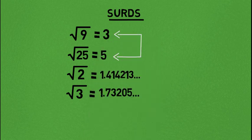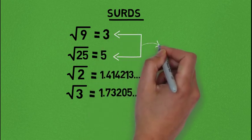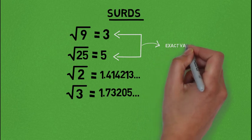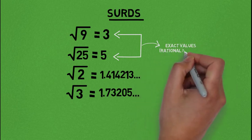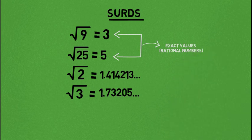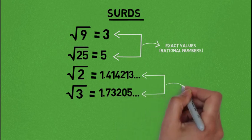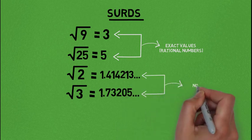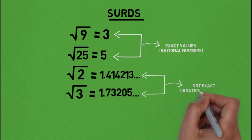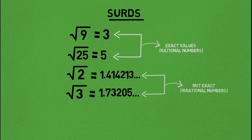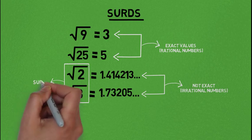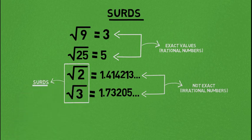As you might have noticed, root of 9 and root of 25 gave exact numbers, or what we call rational numbers. Root of 2 and root of 3 gave non-exact numbers, or numbers which we call irrational — they are not reoccurring, they are not exact. Numbers that give irrational results when written in the simplest form are called sets. So root 2 and root 3 are examples of what we call sets.